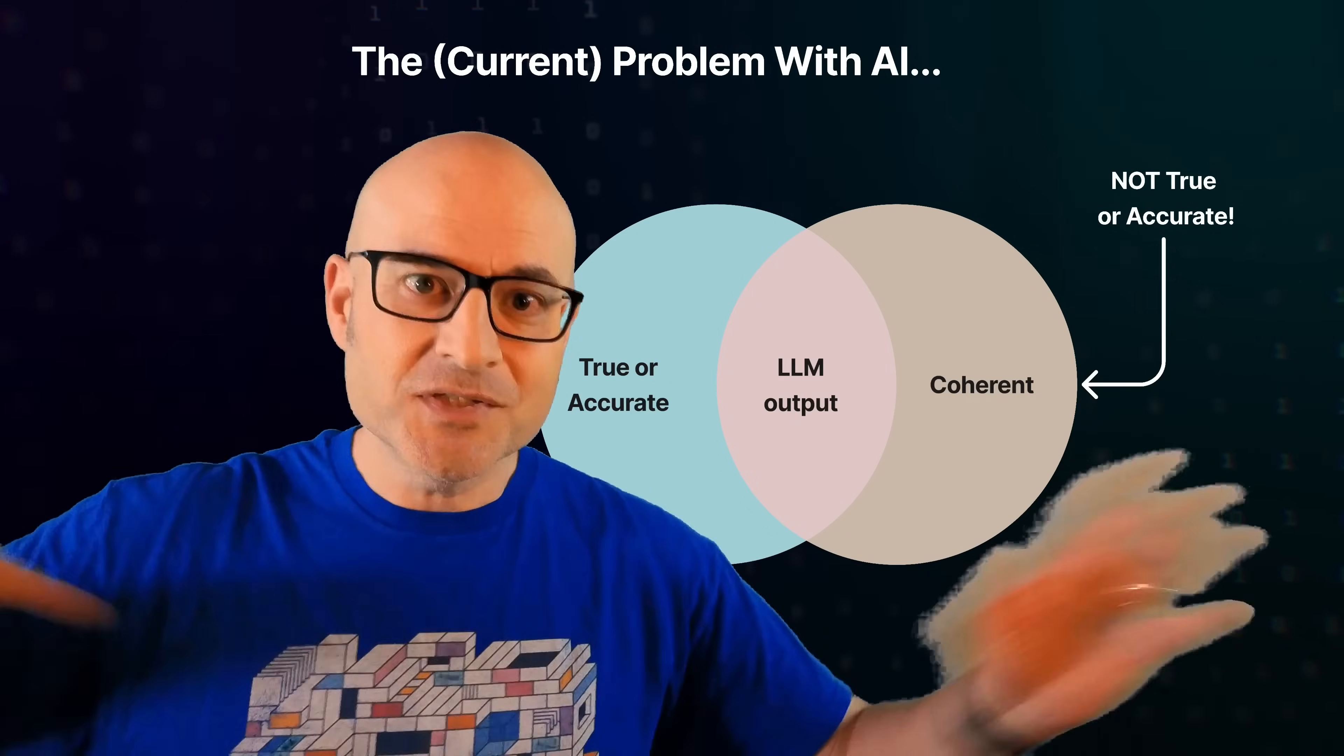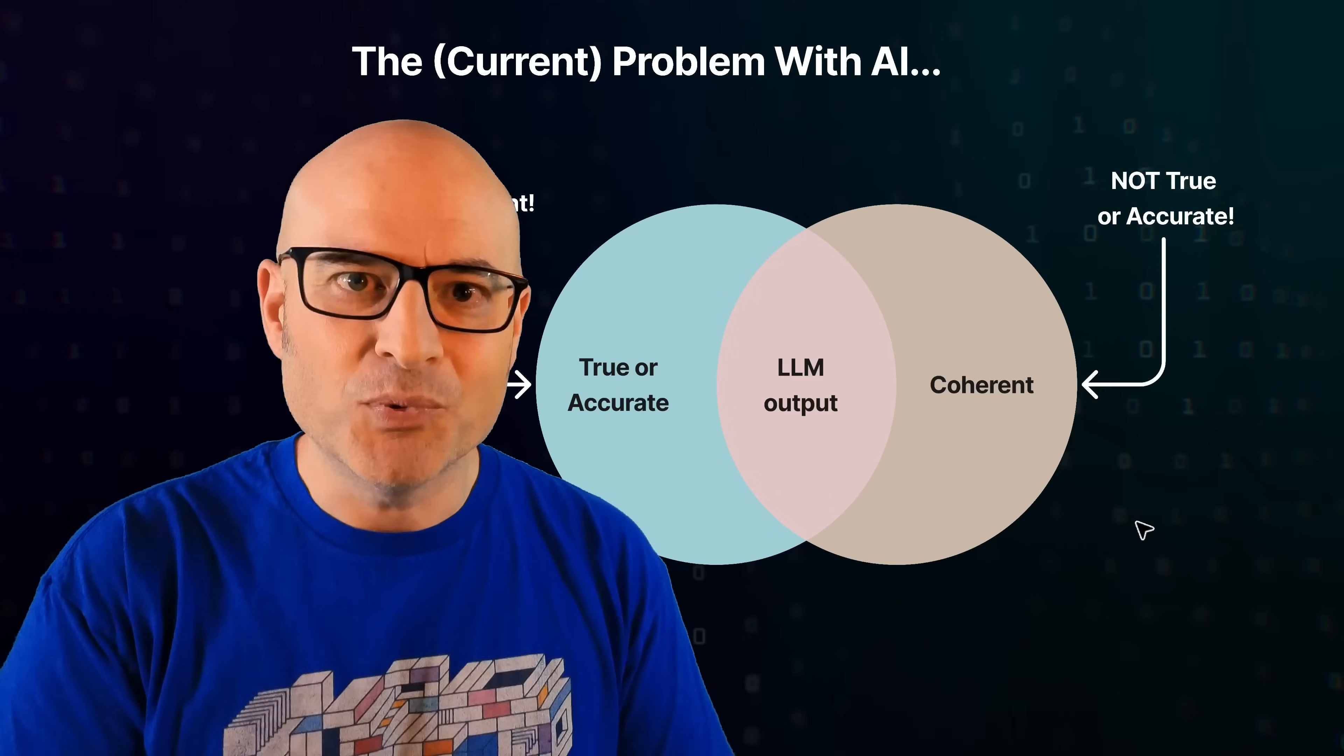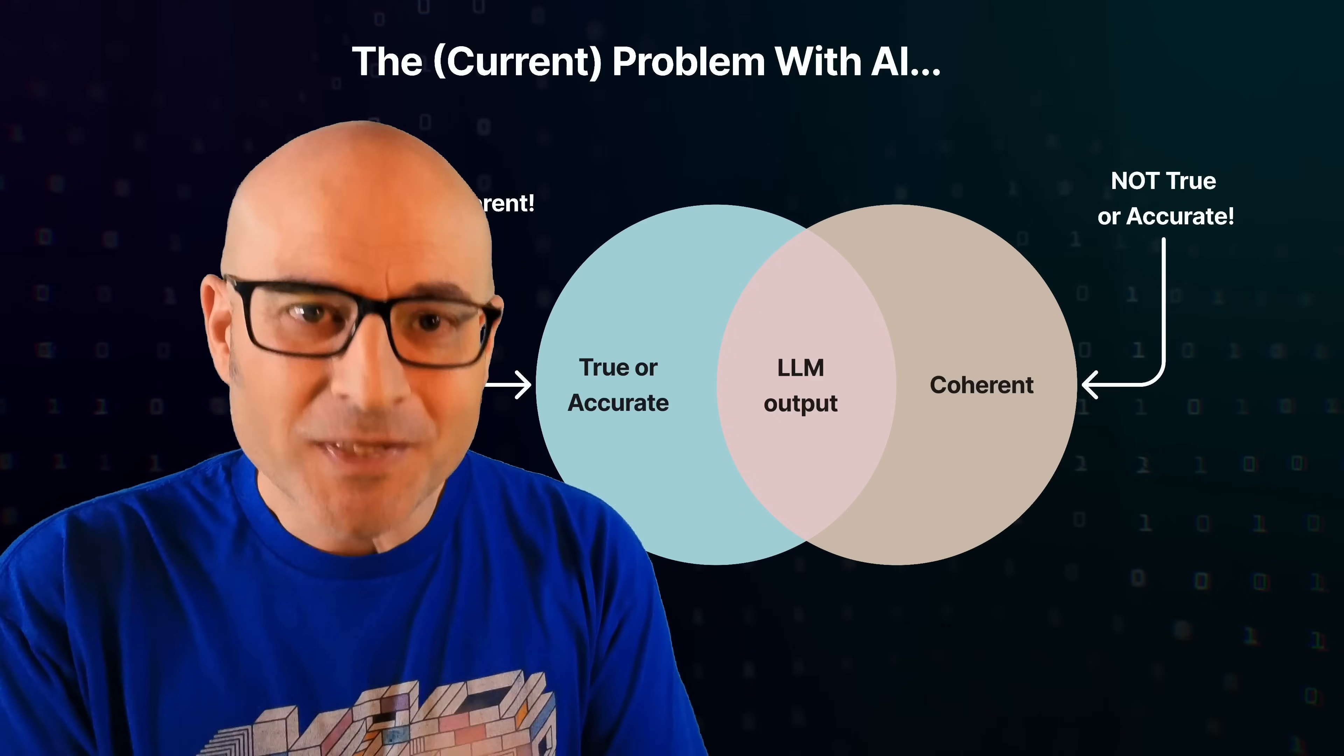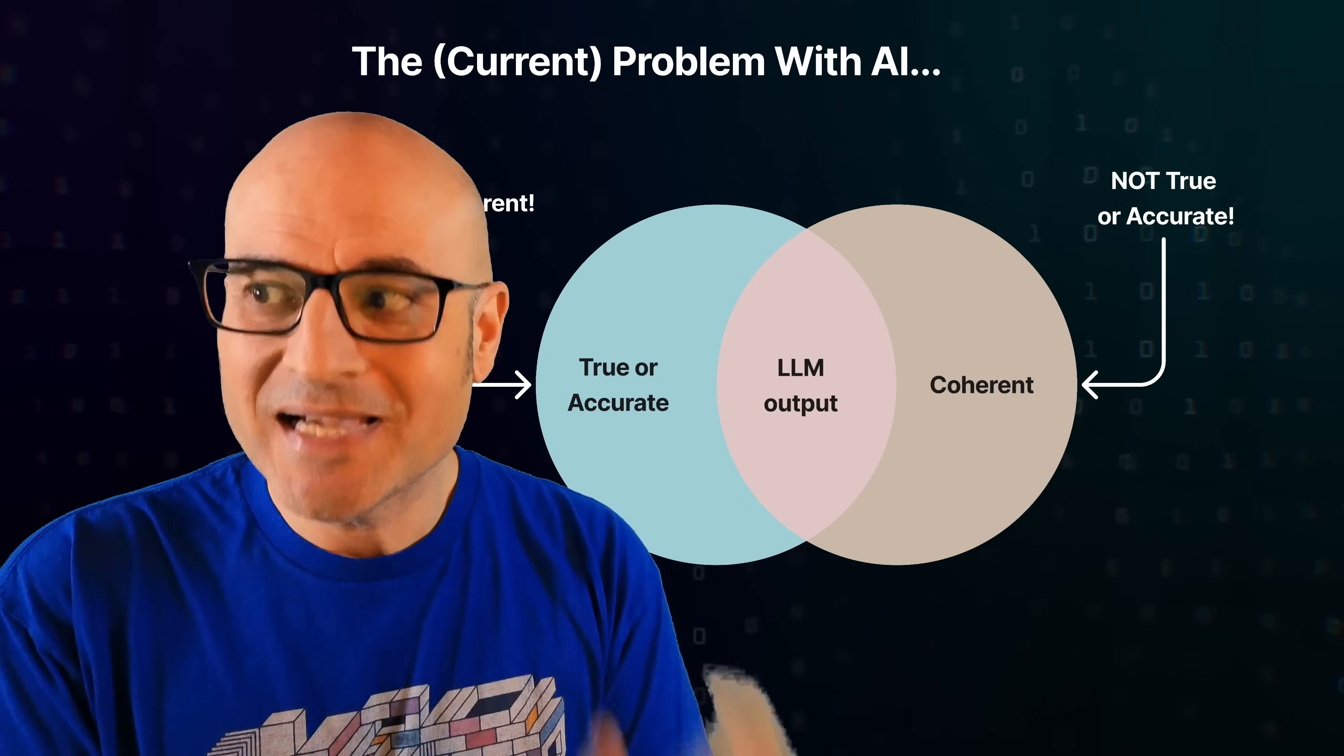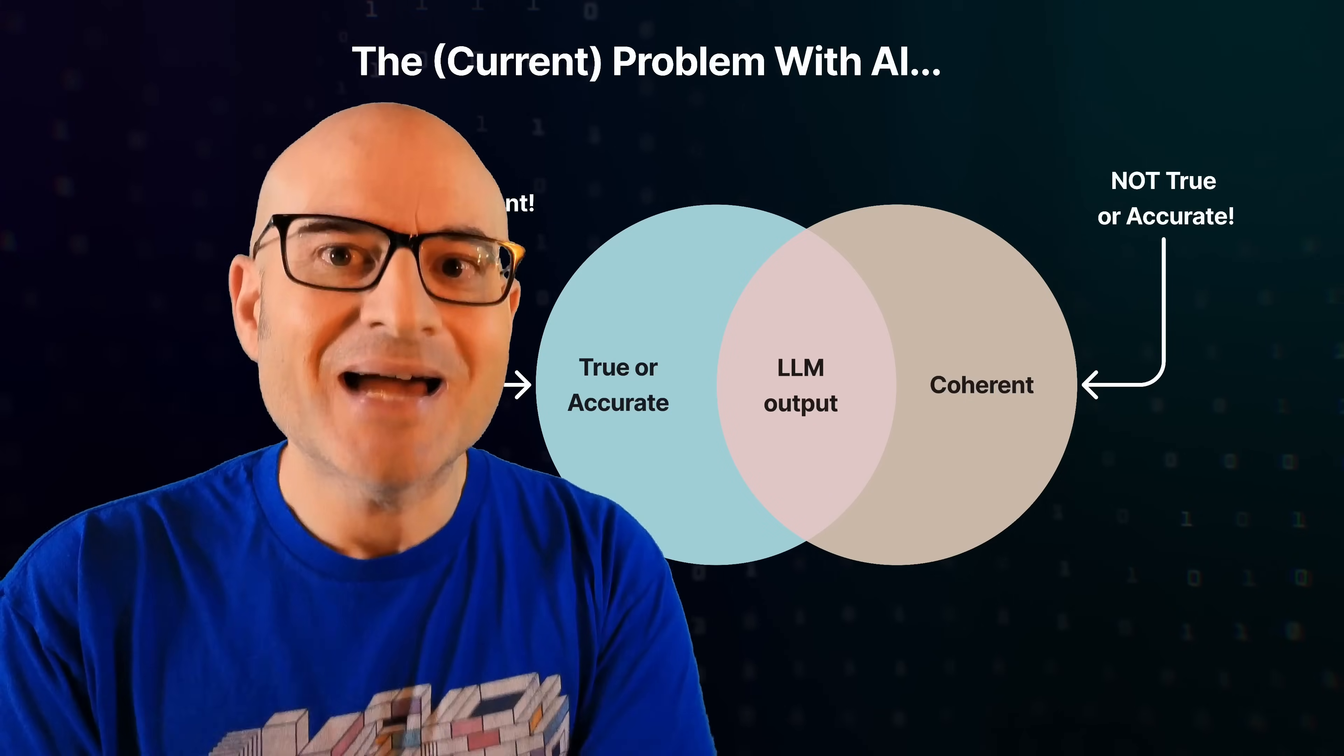Now, AI companies are putting all kinds of other engineering around them to modify the output to make them more true and accurate. But at this point, you've got to recognize that all an LLM can actually do is create coherence, some of which happens to be true.